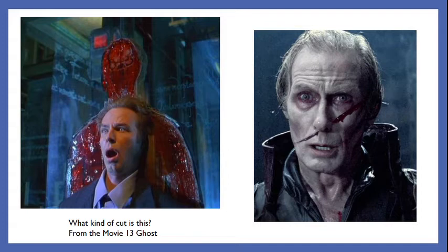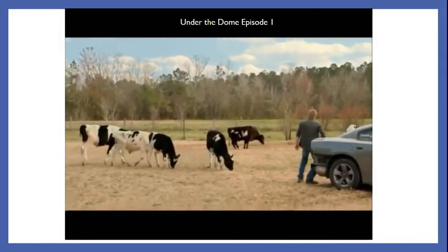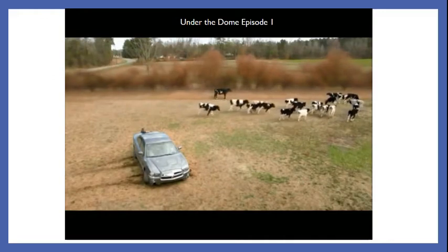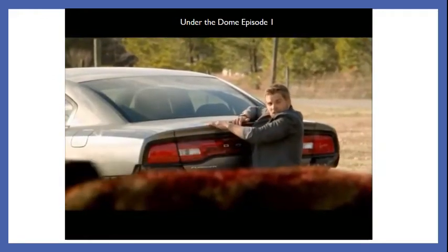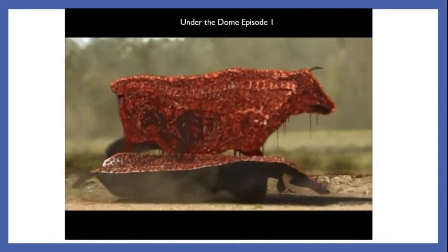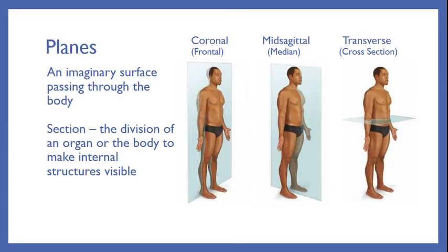Next up, we're going to play a video — a little clip from a TV show called Under the Dome — and it's up to you to decide which plane that cow is being dissected on. That was the mid-sagittal plane. We were able to see some of the cow's spine, so it obviously hit pretty much right there in the middle of his body and separated the left and right side. So that would have been a mid-sagittal.